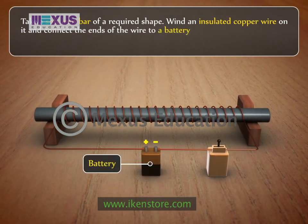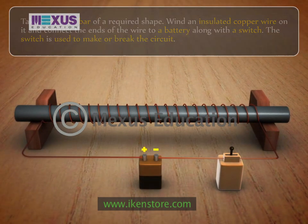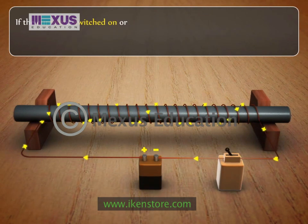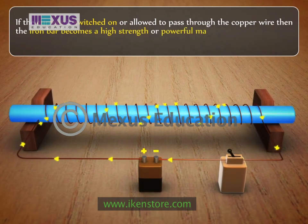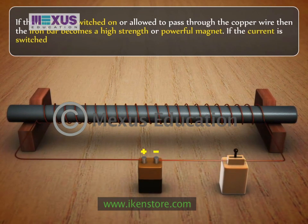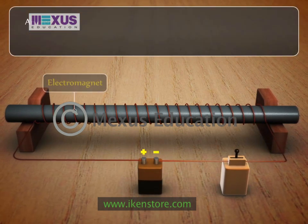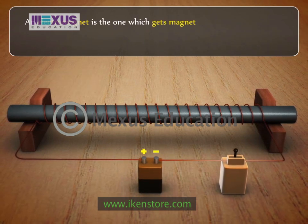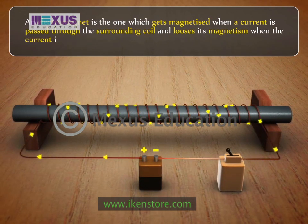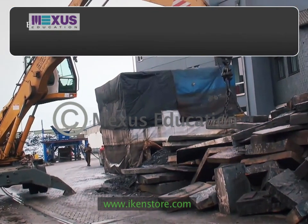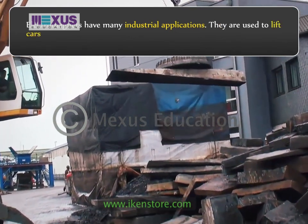Connect the ends of the wire to a battery along with a switch. The switch is used to make or break the circuit. If the current is switched on, the iron bar becomes a high-strength or powerful magnet. If the current is switched off, it loses its magnetism immediately. Thus, an electromagnet gets magnetized when current passes through the surrounding coil and loses its magnetism when the current is switched off.